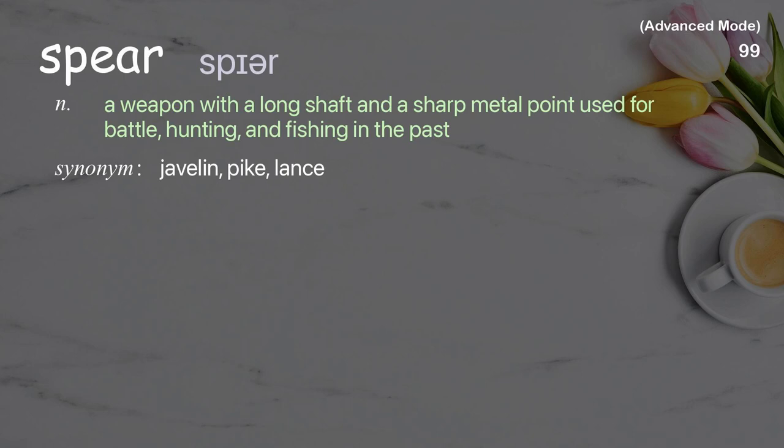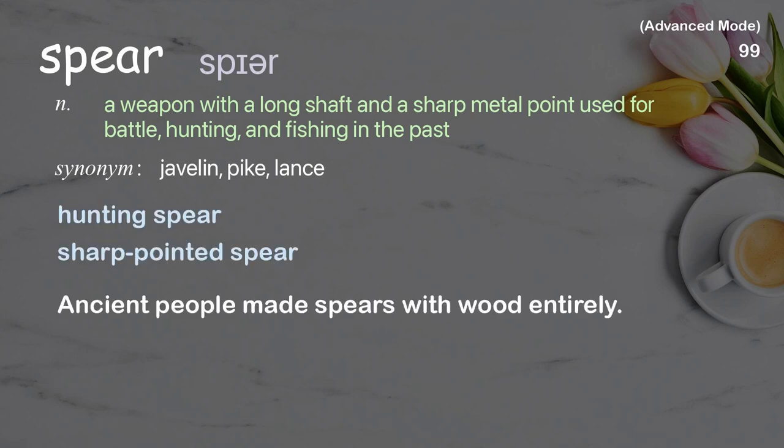Spear: a weapon with a long shaft and a sharp metal point used for battle, hunting, and fishing in the past. Examples: hunting spear, sharp-pointed spear. Ancient people made spears with wood entirely.